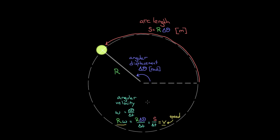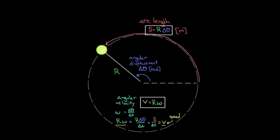So we now have two important boxed formulas: S = r·Δθ relates angular displacement (in radians) to the distance traveled along the arc, and v = r·ω relates angular velocity (in radians per second) to the speed in meters per second. Next, we need to relate angular acceleration to regular acceleration.